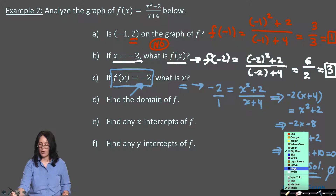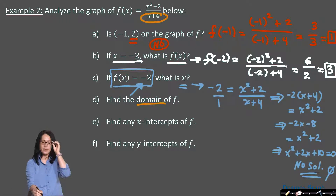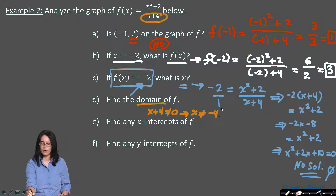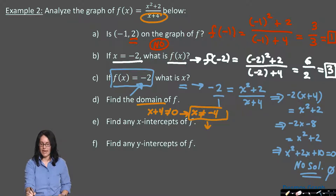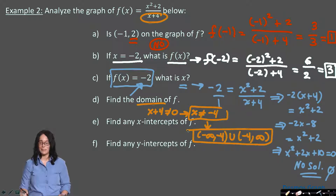For domain, we ask: are there any restrictions? We look for fractions or square roots. There is a denominator here: x plus 4. Denominators can't equal zero, so x plus 4 cannot equal zero, meaning x cannot equal negative 4. Writing that in interval notation: x can be anything to the left or right of negative 4, giving (−∞, −4) ∪ (−4, ∞).